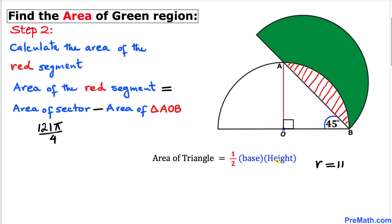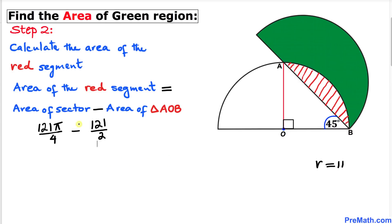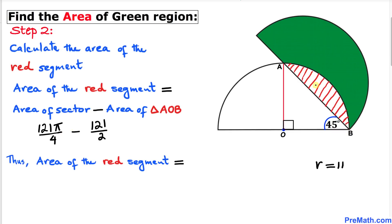Now let's recall the area of a triangle formula: area equals one-half times base times height. So the area of triangle AOB is going to be one-half times 11 times 11, which gives us 121 divided by 2. Thus the area of this red segment turns out to be 121 pi divided by 4 minus 121 divided by 2.